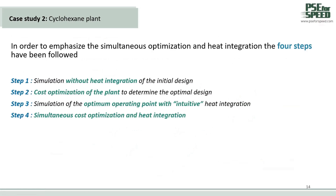To show the simultaneous cost optimization and heat integration, we have at least four steps. Step 1 is the simulation without heat integration of the initial design. Step 2 is the cost optimization of the plant to determine the optimal design. Step 3 is the simulation of the optimum operating point with heat integration. And Step 4 is the simultaneous cost optimization and heat integration, which is the most important step we will show today.